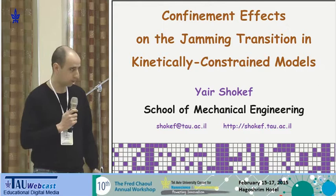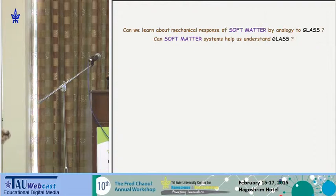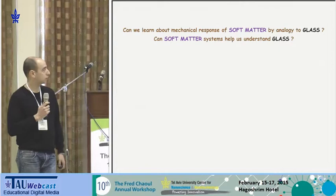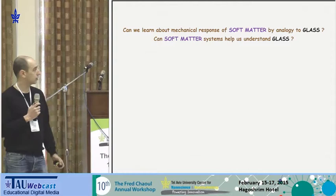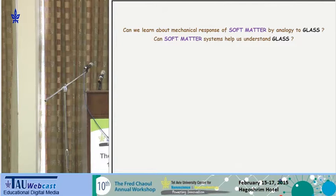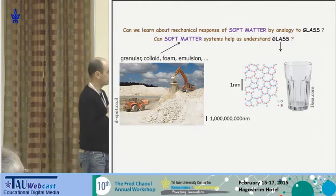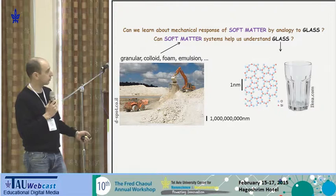Before all these complicated words, maybe a few words about the jamming transition, or how all kinds of systems become jammed. The main idea behind this line of research is to try and understand whether we can connect between the mechanical properties of all kinds of soft matter systems — I'll give some examples in a minute.